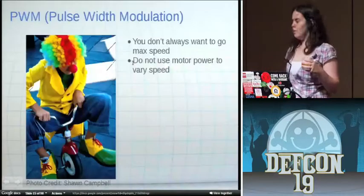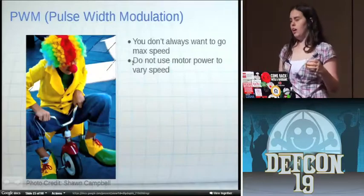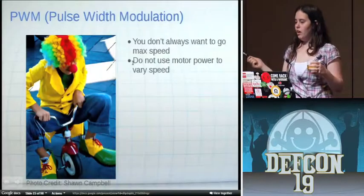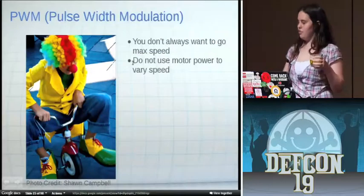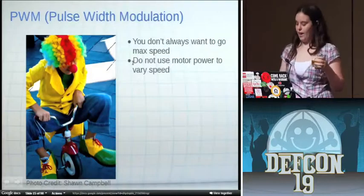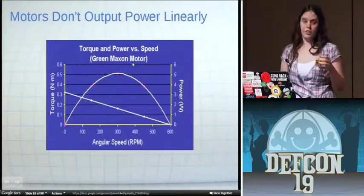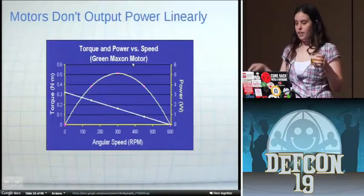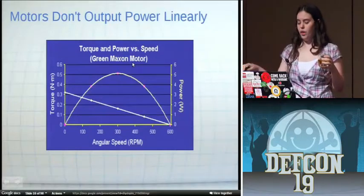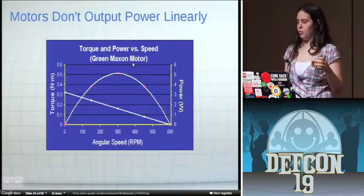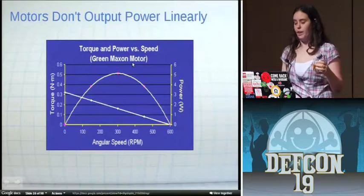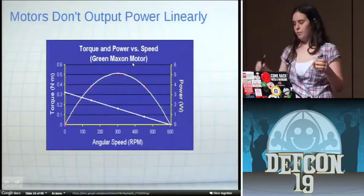First item is pulse width modulation abbreviated to PWM. Sometimes you want your robot to be going at a speed somewhere between zero and int max. People frequently decide that the way to do that is to just feed less energy into the motors. And that's a bad idea. Motors do not output power linearly. You can see this straight line is the force output. When it hits the side with the torque, that's called the stall torque. When it hits the X axis that is called the free running speed where there's nothing on it at all.